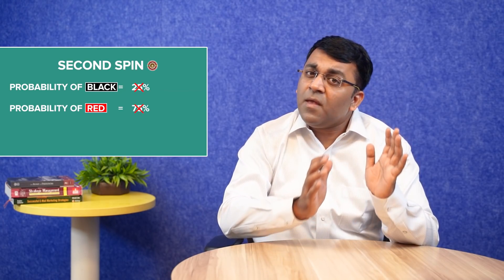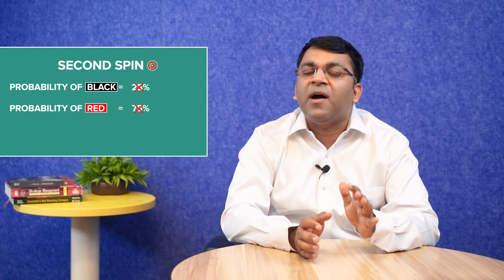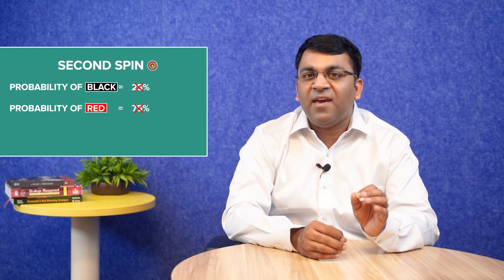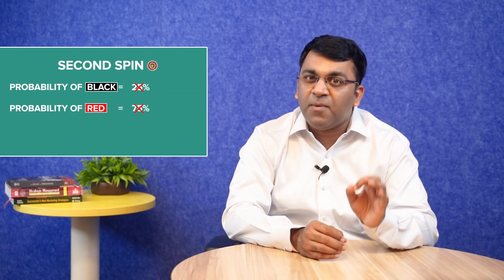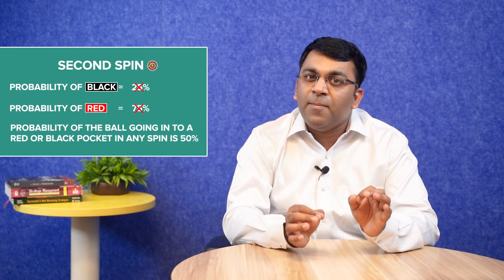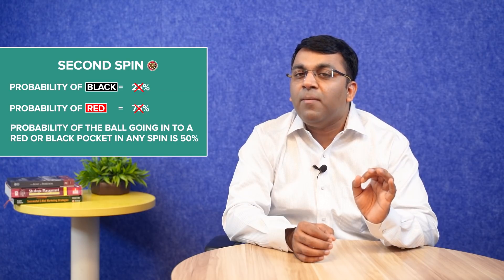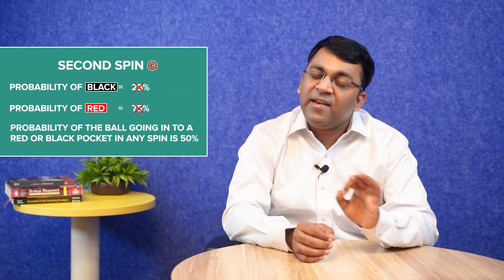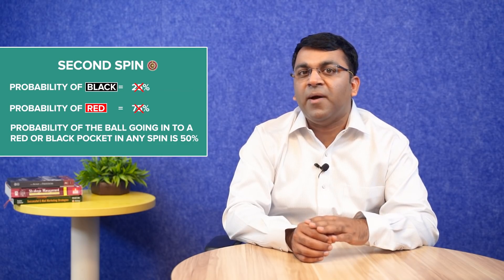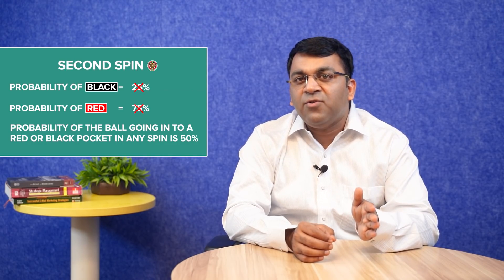This is the problem because spin 1 and spin 2 are actually two completely independent events, as will be spin 3, spin 4, spin 5, and so on. This means the probability of the ball going into a black pocket or a red pocket on any spin will always be the same — 50%, or 1 in 2.